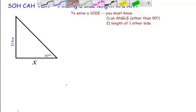I'm going to look at how to use SOHCAHTOA to find the length of a side of a right angle triangle. In order to do that, you must know an angle and the length of one other side.